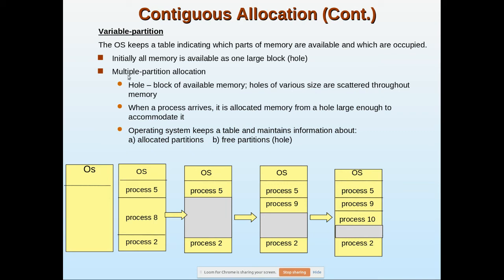Initially all memory is available as one large hole. As processes come and go, holes of various sizes are scattered throughout memory. If process 9 leaves, a hole forms there. If process 5 also leaves, that adjacent hole and the previous one can be combined into a bigger hole. When a process arrives it is allocated memory from a hole large enough to accommodate it, and the OS table maintains information about allocated and free partitions.